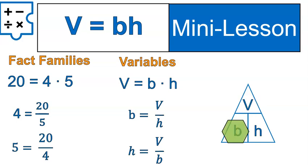If you're trying to calculate your base, cover that one up, and you've got volume divided by height — that's how you find the base. If you're trying to find the height, you cover that one up, and you've got volume divided by base, or V over B, just like you see in the third equation there. Use this pyramid if you like it; if you don't, just use those three formulas for calculating volume, area of the base, and height.